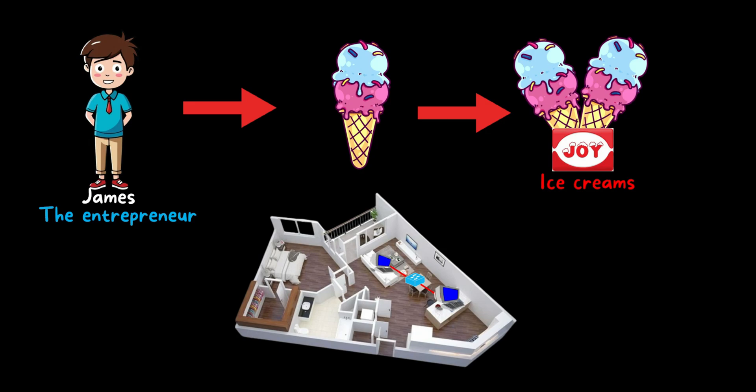Now James and his assistant can transfer files using this network. But James also needed internet access for business requirements — to send emails and do marketing for his ice cream. For that, he brought one router and connected it to the network switch, then connected that router to the service provider's internet. Hence both James and his assistant can access the internet together.